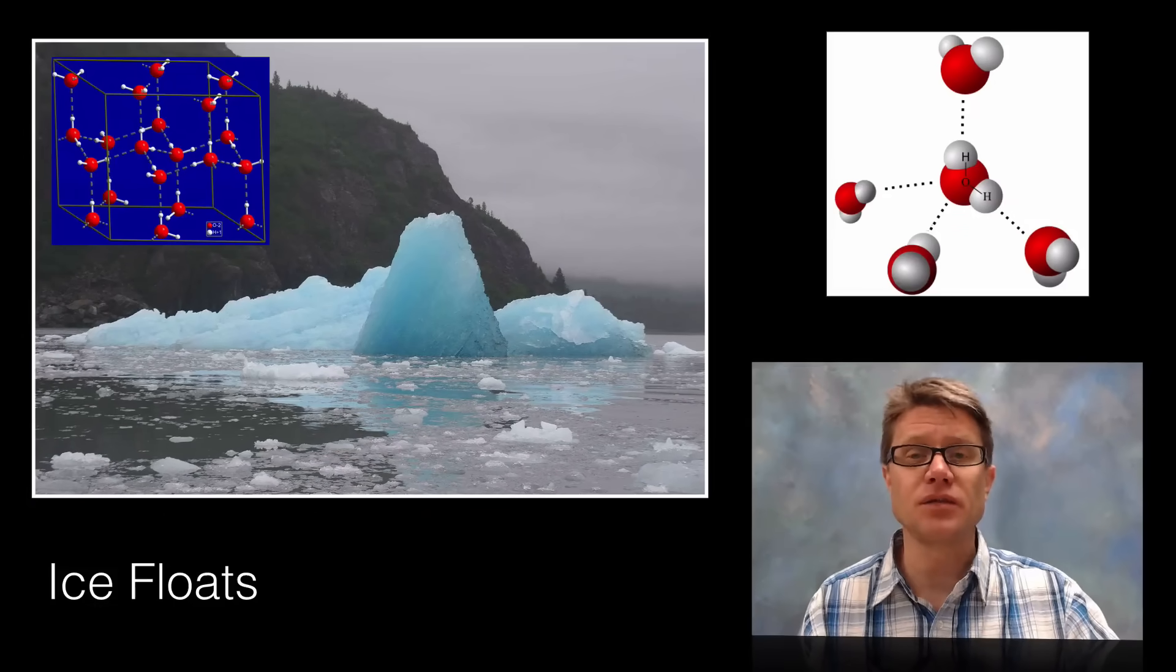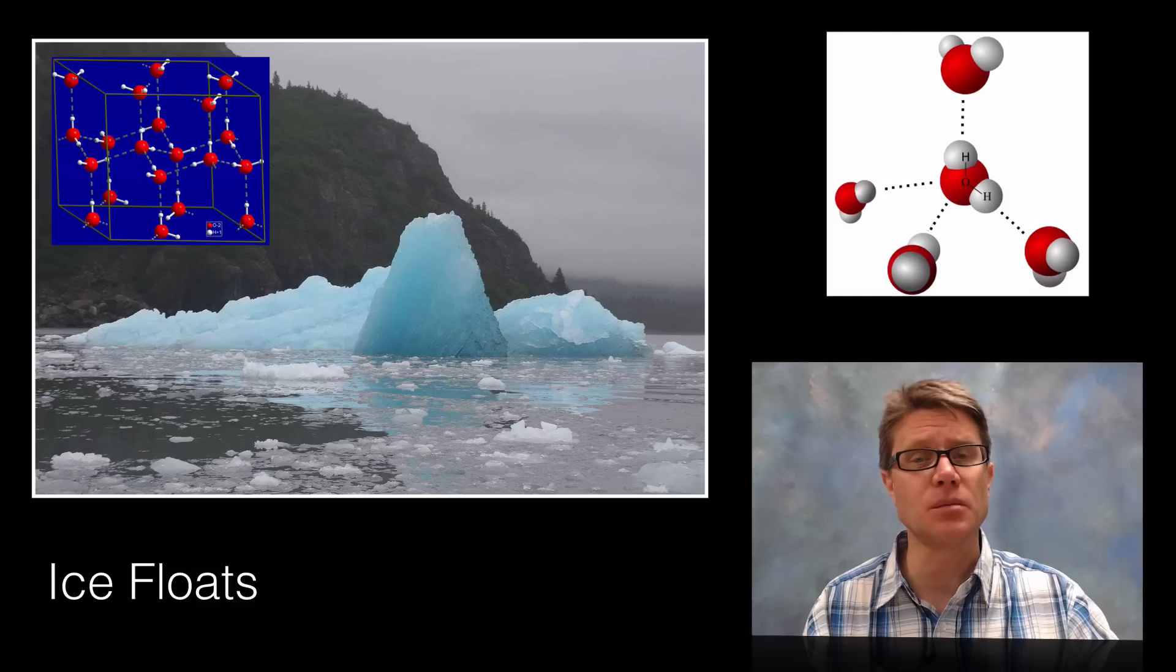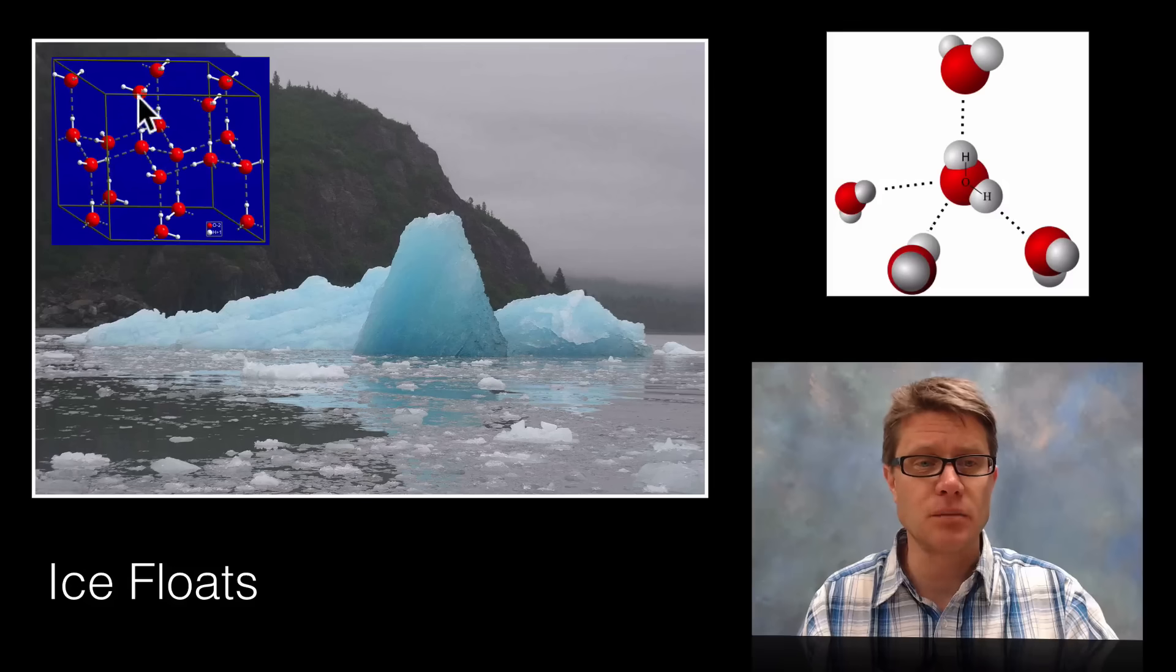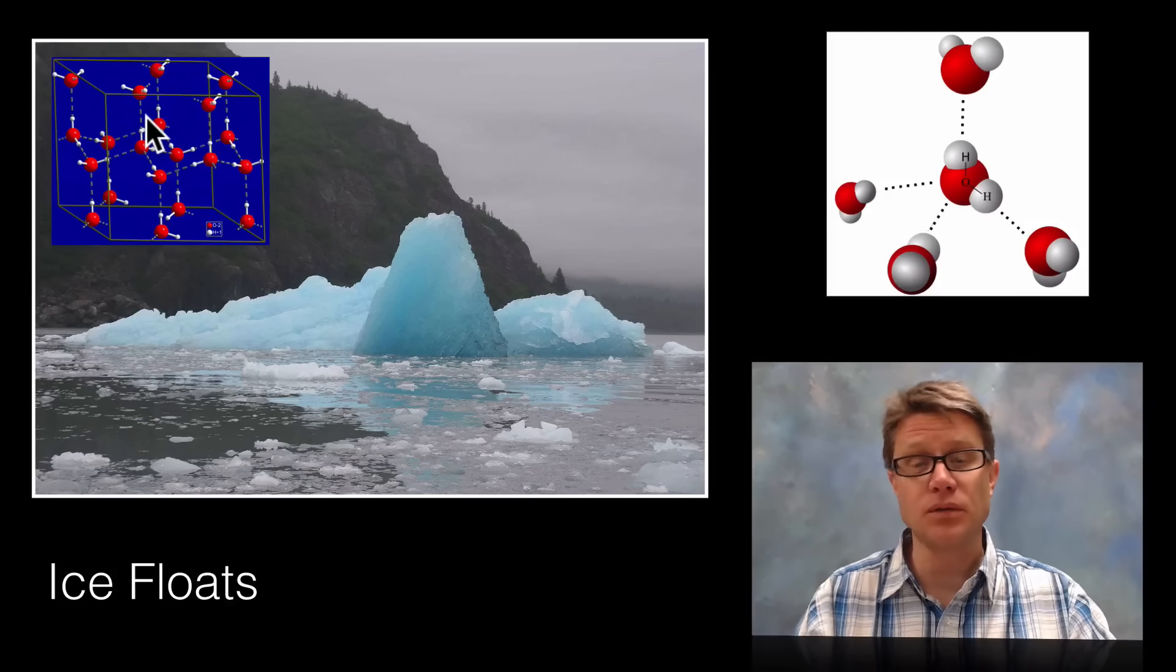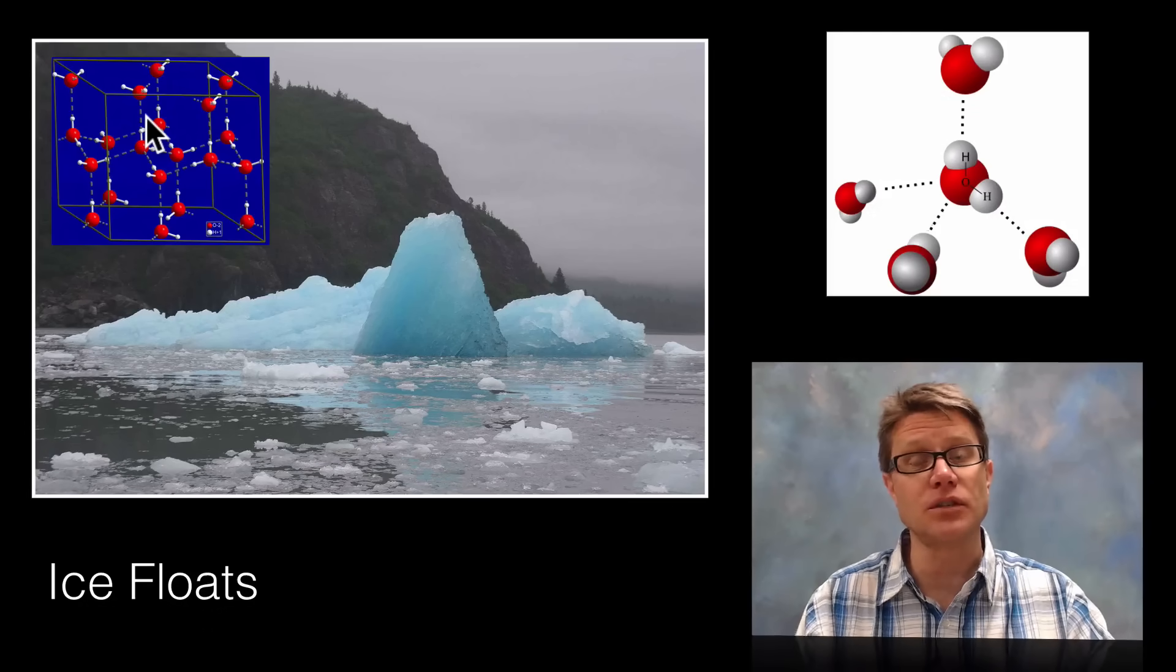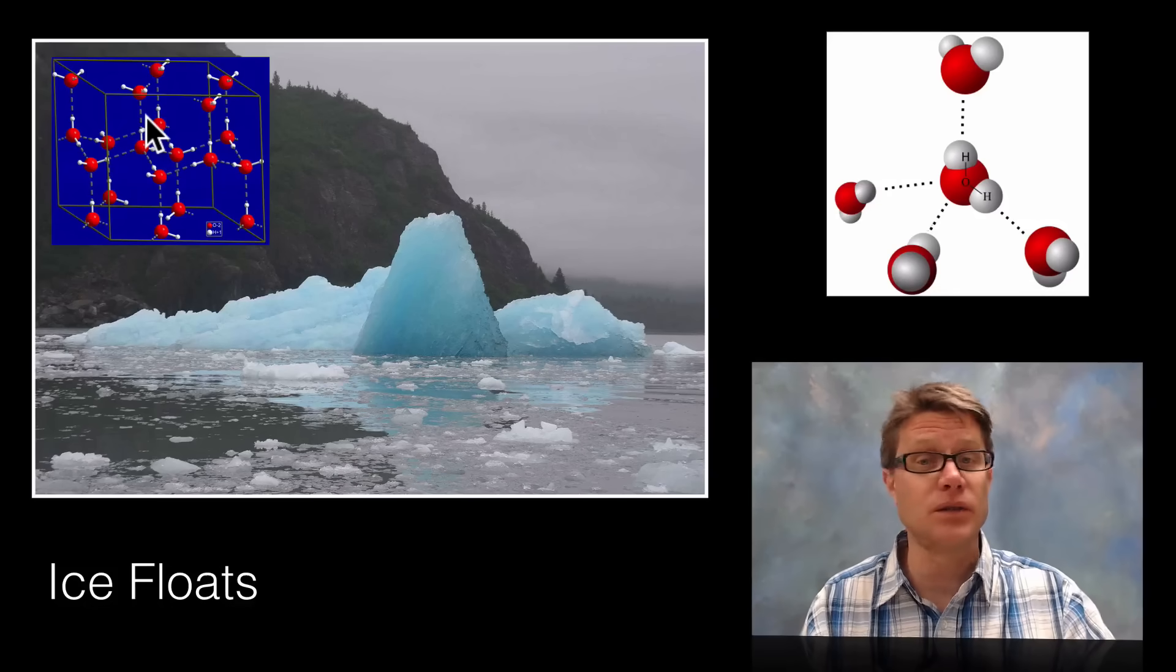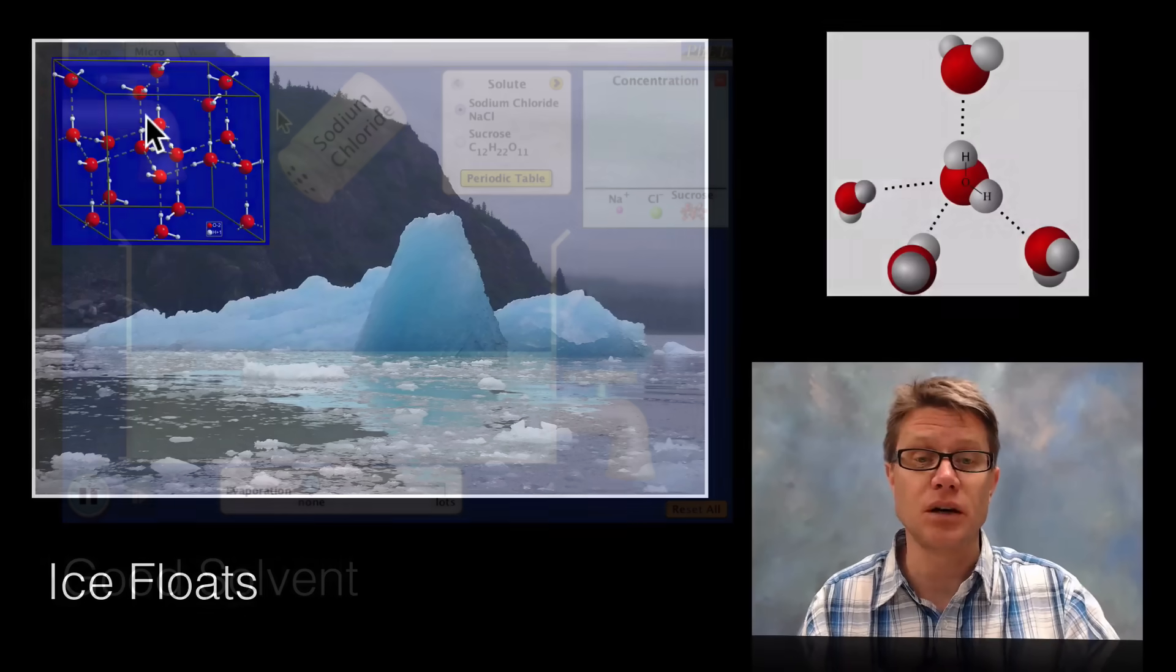Another property is that ice floats. You might think well that's obvious. But with most matter, with most molecules when you cool them down they become more dense and they would therefore sink. But water doesn't do that, and that has to do with these hydrogen bonds. As it cools down it's forming this beautiful three dimensional matrix which allows it to actually decrease density. Why is that important? Well if it didn't do that then ice would settle at the bottom of the oceans and we would quickly be a frozen planet.